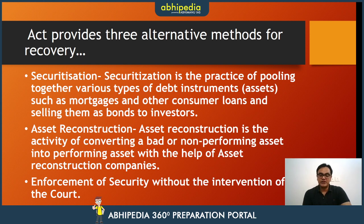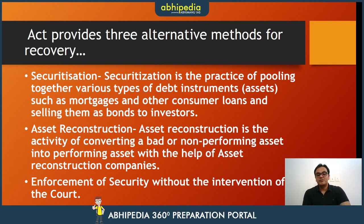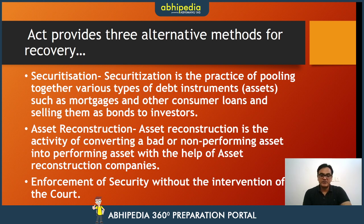The ARC takes over the whole loan. For example, if you have a 10 lakh loan and haven't repaid it, then the property attached is purchased by the ARC, which pays off the bank. The payout can be in installments or a one-time payment. The third method is enforcement of security without intervention of the court.